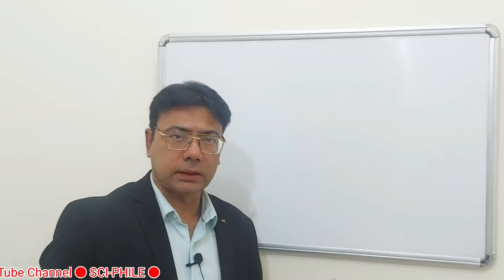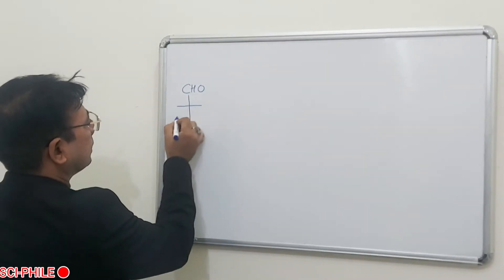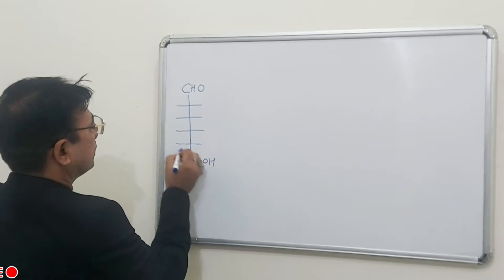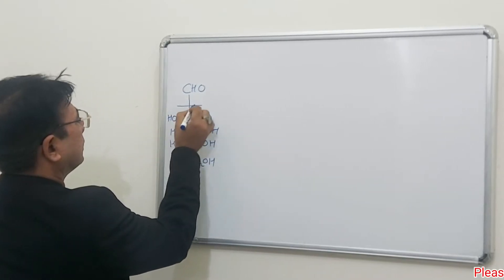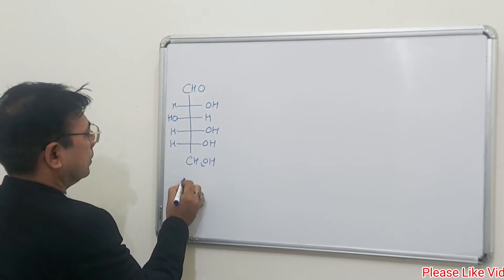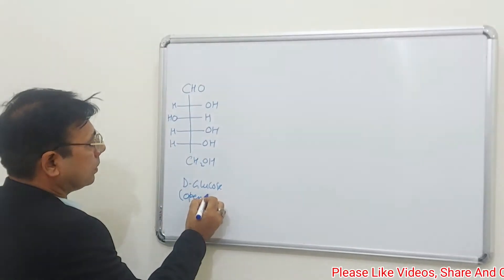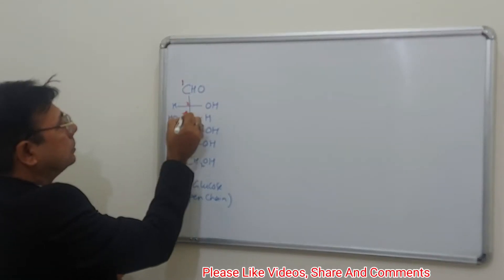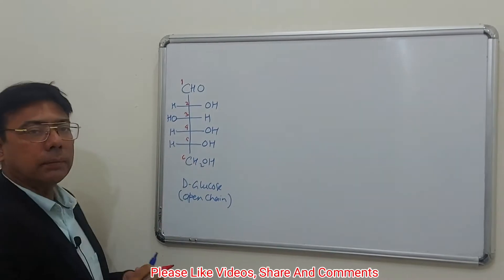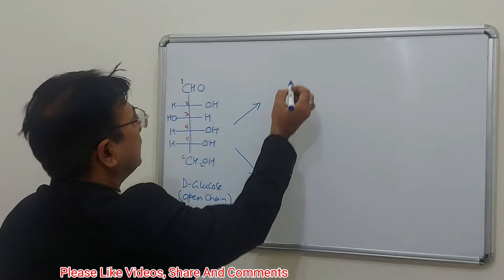Let us see how we interconvert Fischer and Haworth structures in the case of glucose. This is D-glucose in open chain structure. It is numbered like this: carbon 1, 2, 3, 4, 5, and carbon 6. When it forms a closed structure, it can form either of two ring forms.